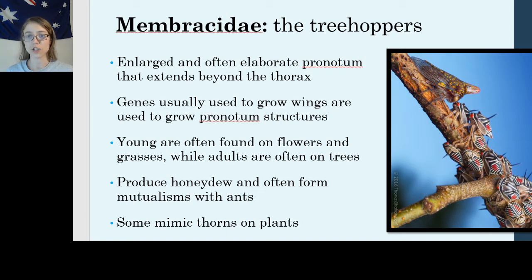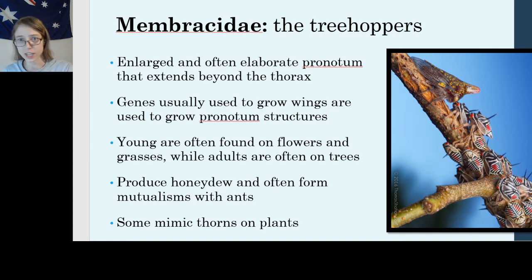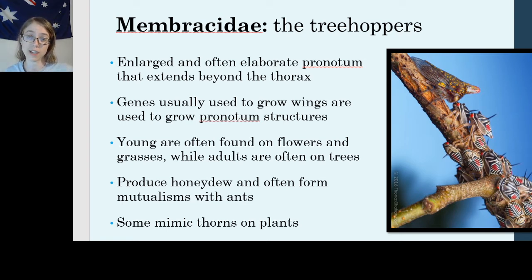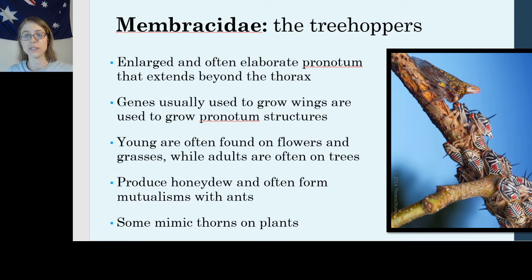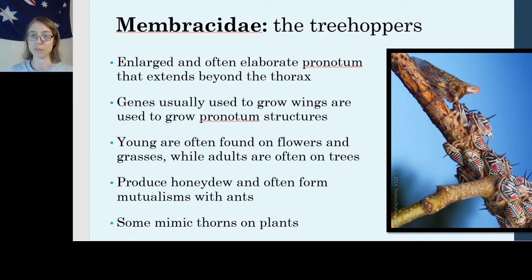What I found really interesting — because I'm a geneticist — is that the genes usually used to grow wings in most insects have been co-opted for helping to grow the pronotum structures in membracids. Genes that are typically used to direct the development of wings, telling things like where a vein goes and which piece grows out during development, those same genes in membracids have been switched on during the development of the pronotum as well, giving rise to these fantastic structures seen in Membracidae.